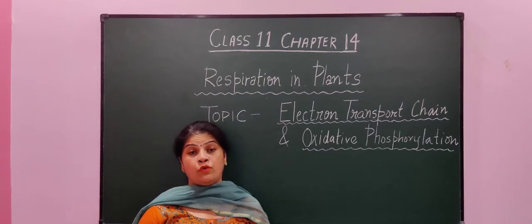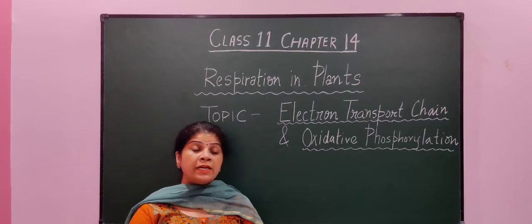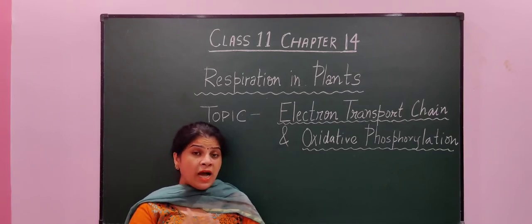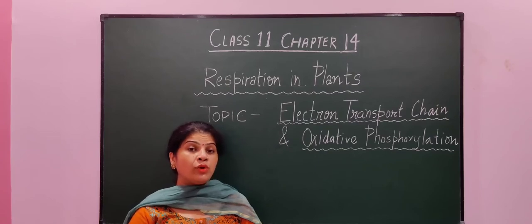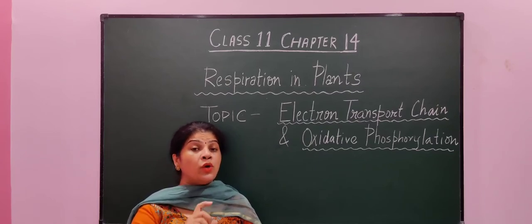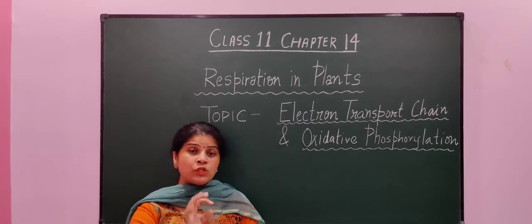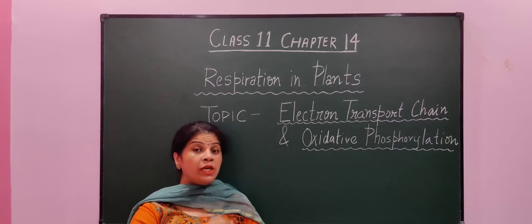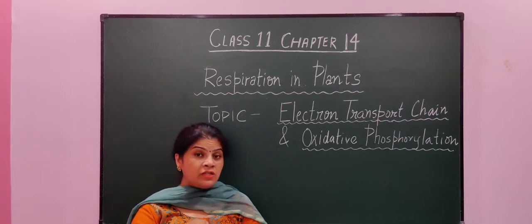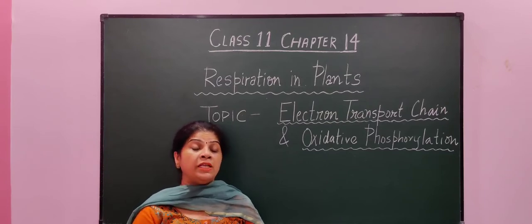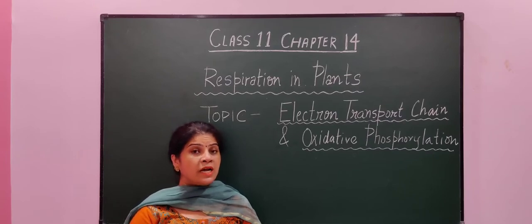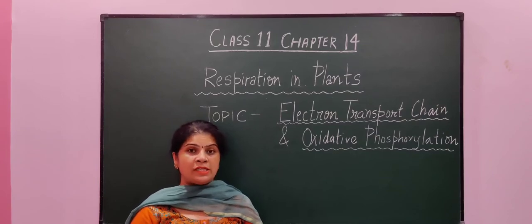The other topic is oxidative phosphorylation. Oxidative means oxidation; phosphorylation means formation of ATP. Here, ATP formation occurs by the oxidation of NADH2 and FADH2. Today we are going to discuss in detail electron transport chain and oxidative phosphorylation. So let's start.